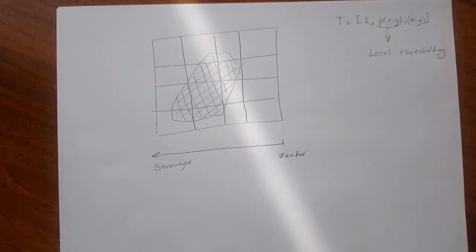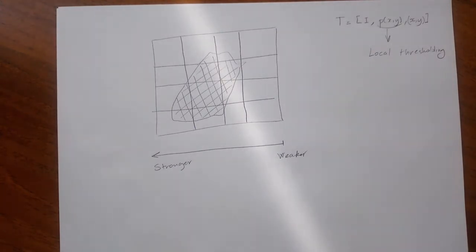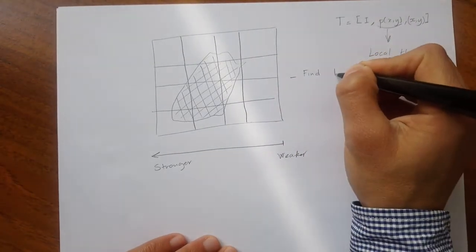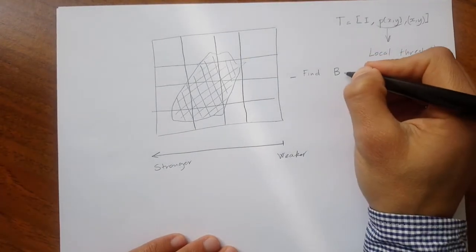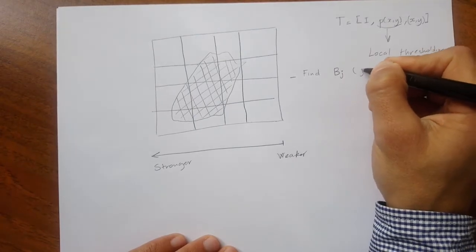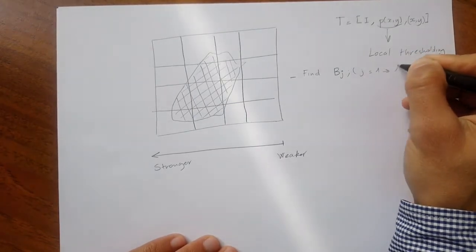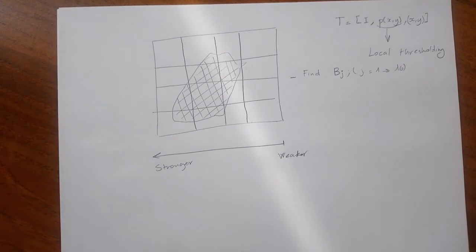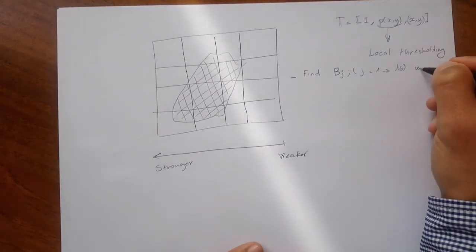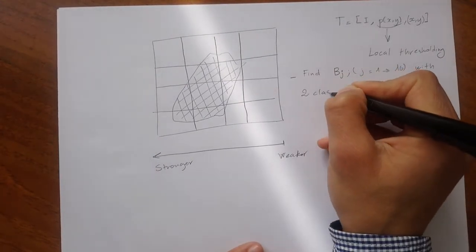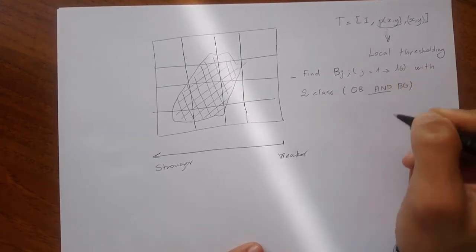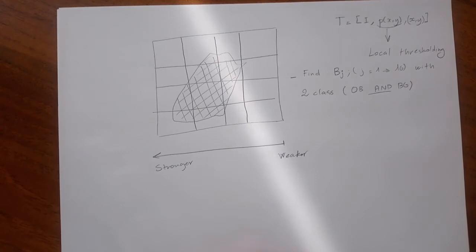One way to do that is to divide the image into several blocks — say a four by four grid, for example. Then what I want to do next is find blocks where you have two classes: the first class and the second class, object and background. Let me denote the block as B and the number of the block as G, where G equals 1 to 16 since we have four by four divisions giving 16 blocks. So find all the B_G blocks with two classes — object and background.